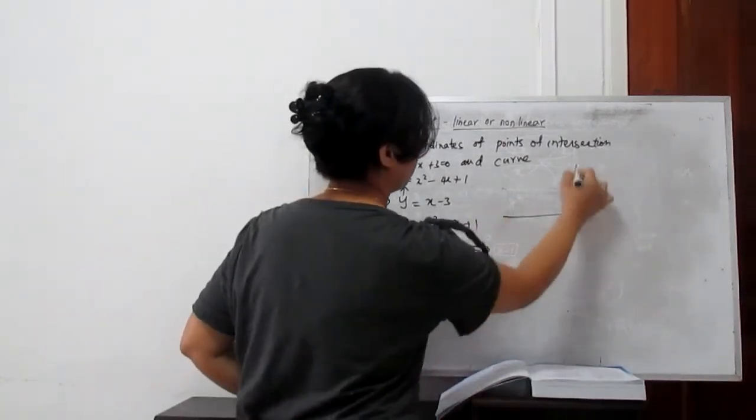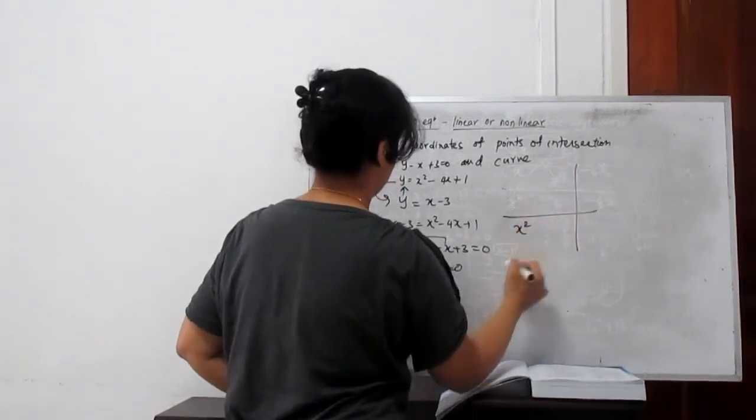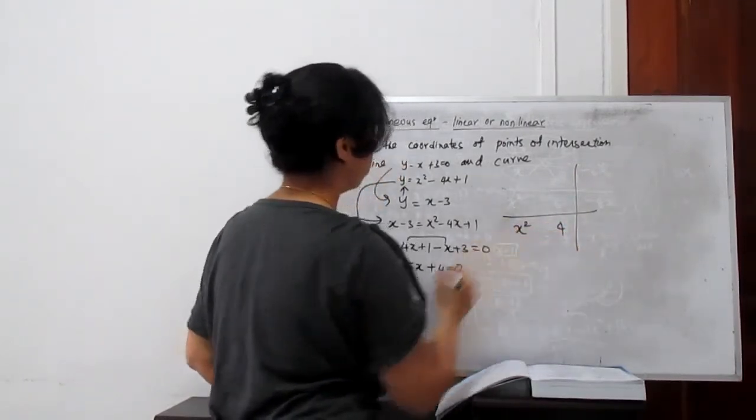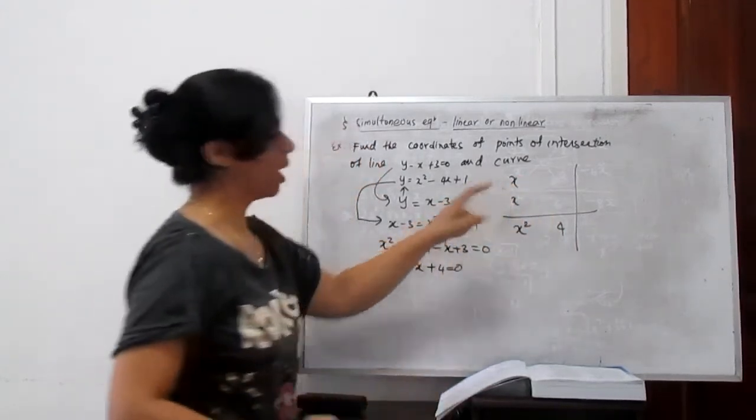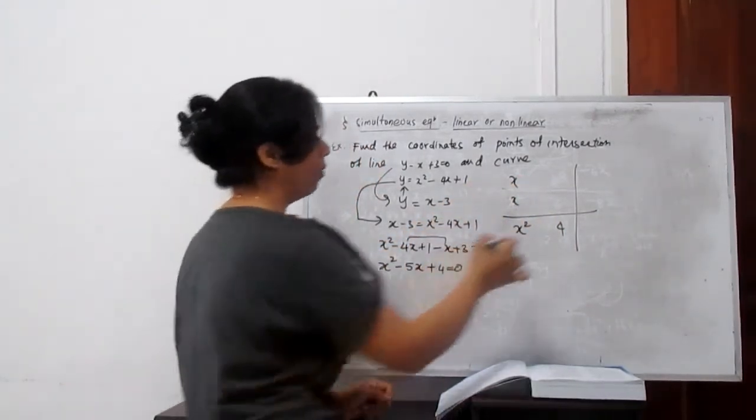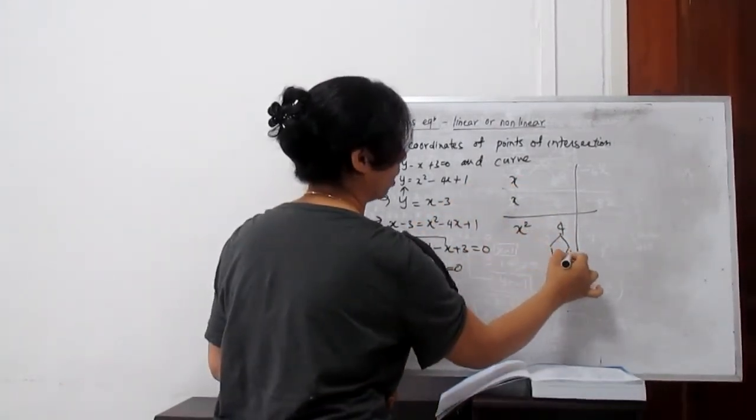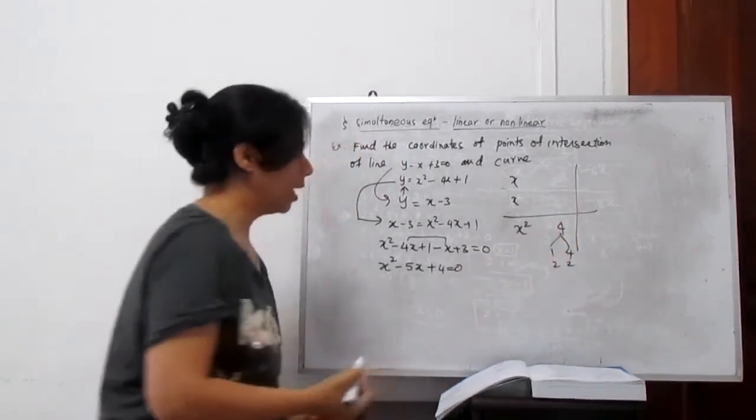So same way, you need to find the factors. x squared, constant is 4. So x squared is 1, I put here x. x times x is x squared. Now we need the factor of 4: 1, 4 and 2, 2. Clear?